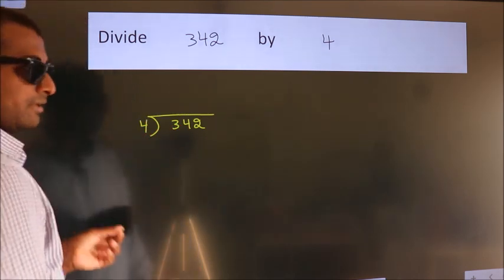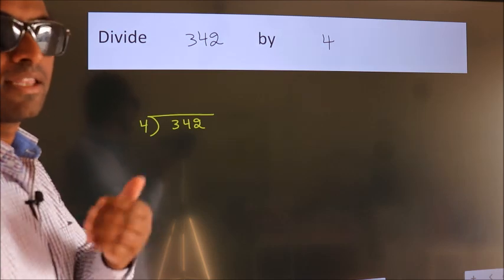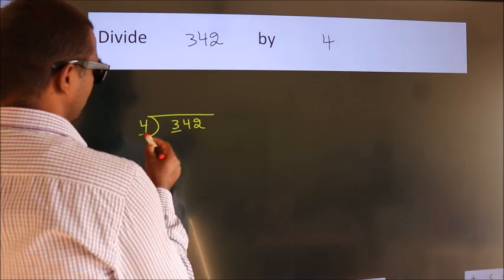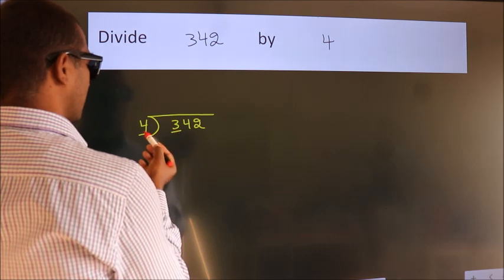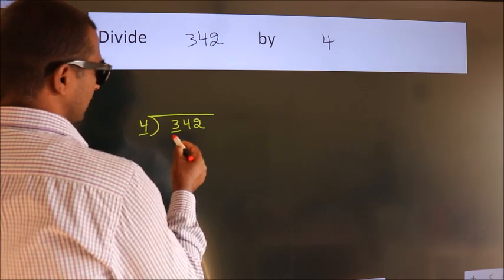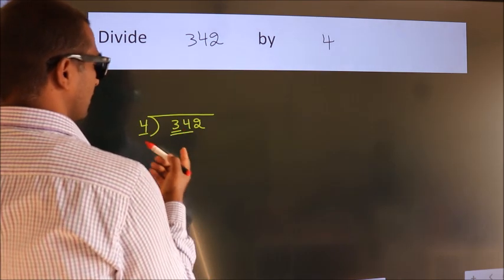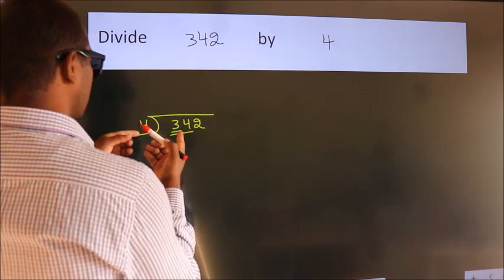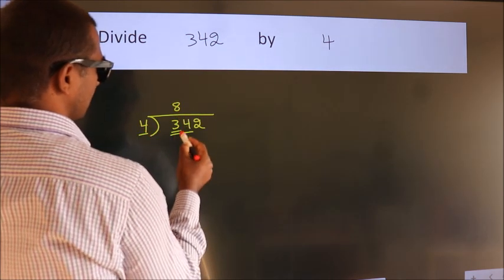This is step 1. Next, here we have 3, here 4. 3 is smaller than 4, so we should take 2 numbers: 34. A number close to 34 in the 4 table is 4 eights, 32.